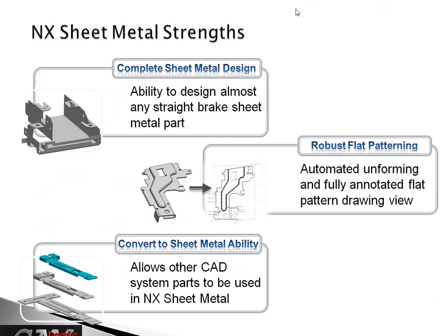Here are the strengths. You've got complete sheet metal design — you can do anything. You're only limited by your own expertise or interest in using different commands. There are extensive commands available. The patterning and making flat patterns is great and useful — you can put annotations on there, and we'll get to that shortly. There's also the ability to create sheet metal and convert to sheet metal. You can take parts, and as long as you can convert it to a uniform thickness part, you can roll from there.